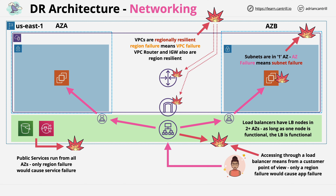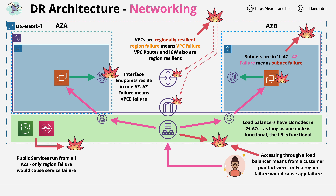If your application needs private access to any public-space services, you'll need to use interface endpoints. Be aware that these are tied to a specific subnet in one availability zone, so failure of an availability zone will also mean the failure of an interface endpoint. However, you can provision interface endpoints one into each availability zone, so deploying multiple interface endpoints allows you to add high availability to any VPC-based application design. This is your local resilience and DR capability — a disaster within an availability zone means your application can use alternative working availability zones within that region.